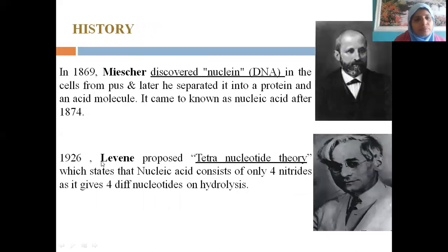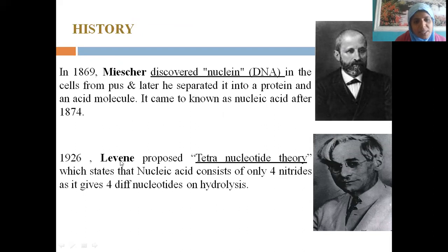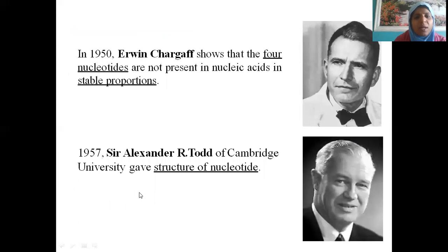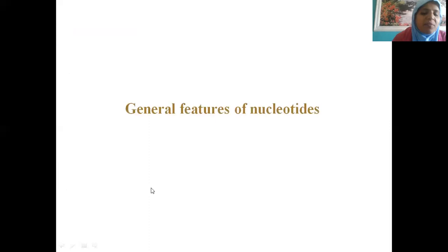In history, in 1869 Miescher discovered nucleic DNA in cells and later separated it into a protein and an acid molecule, which became known as nucleic acid after 1884. In 1926, Levene proposed the tetranucleotide theory, stating that nucleic acid consists of only four nitrogenous bases giving four different nucleotides on hydrolysis. Chargaff's rule followed. Alexander at Cambridge University gave the structure of the nucleotide.